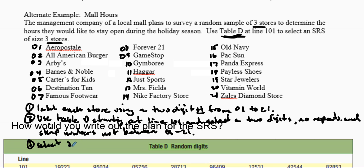We want to select three stores. You label each store using a two-digit number from 01 to 21. We're going to select numbers left to right.